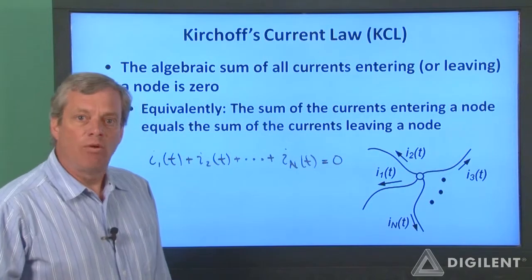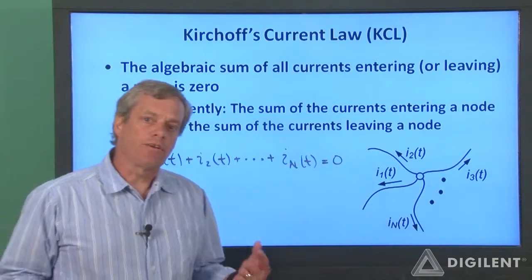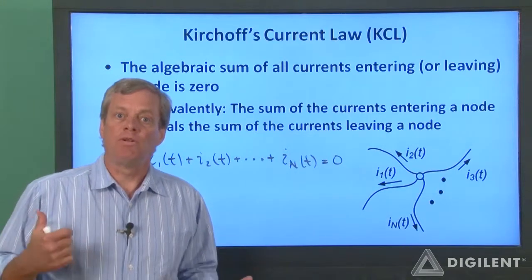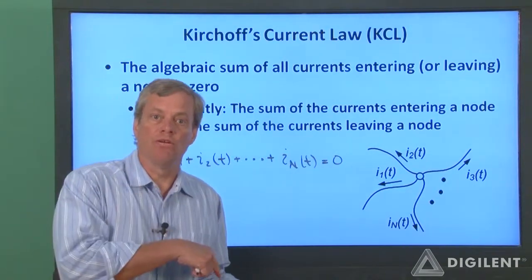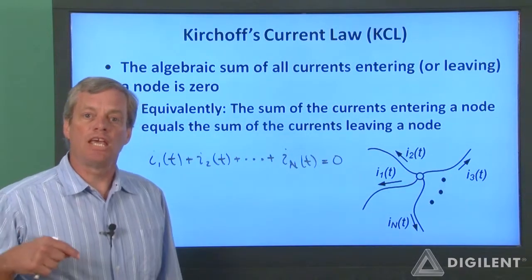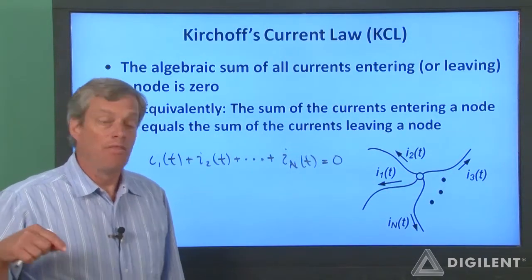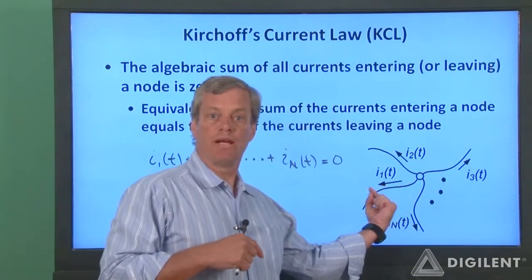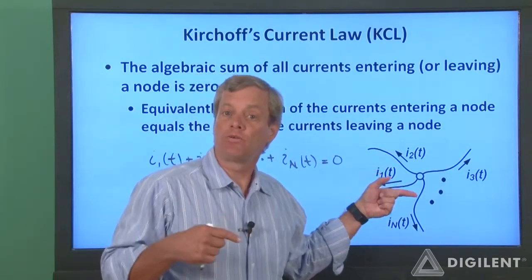Now, in our statement of KCL we say that we can sum either the currents entering or leaving the node. For this example, let's sum the currents entering the node. Remember that switching the current direction corresponds to changing the sign of the current. Therefore, if i1 is leaving the node, it corresponds to negative i1 entering the node.